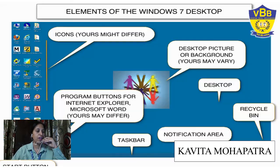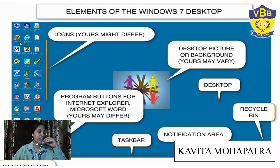So these are known as icons — the programs button for Internet Explorer, Microsoft Word (W is written for Microsoft Word), E for Internet Explorer. This is My Computer. These are icons. This is the taskbar — the bottom bar is known as the taskbar.